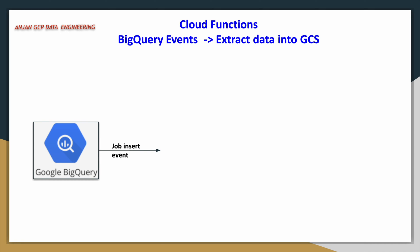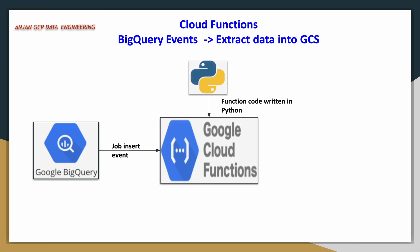In this video, we will see a particular use case where there is a table in the BigQuery dataset and the table is getting refreshed, but we don't know the exact time when the table is getting refreshed. In such use cases, this event-driven architecture is very useful. Whenever that table refresh event happens, we are going to trigger a cloud function.